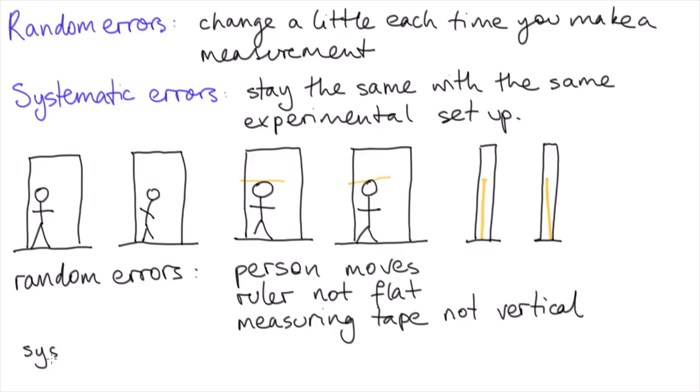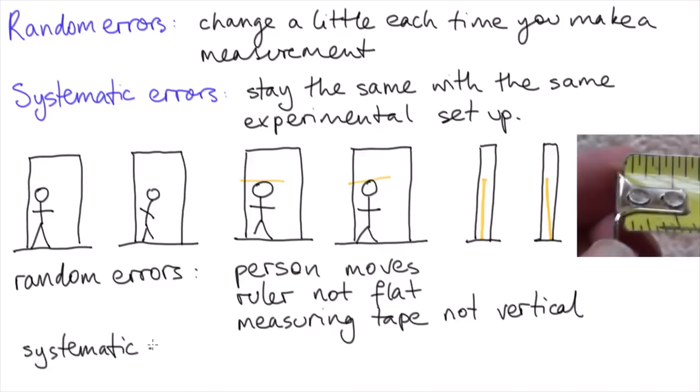Now what about systematic errors? Maybe the measuring tape has had its end bent off so that the counting starts at half a centimeter instead of zero. Or maybe it's an old plastic measuring tape that's been stretched out of shape and the centimeter marks are no longer really one centimeter long.